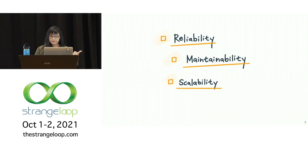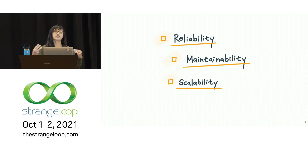When we build distributed systems, we're designing for three main concerns. First, reliability — how to make sure that the system continues to work correctly and performantly. Second, maintainability — how to make sure that all the different people who are going to work on our system over time can understand and work on it productively. And third, scalability — how to make sure that we have reasonable ways to deal with our systems as they grow.